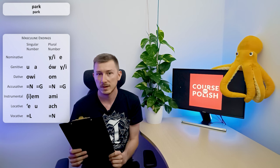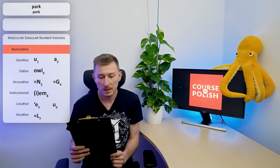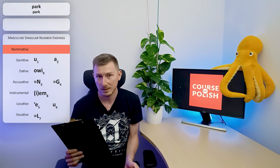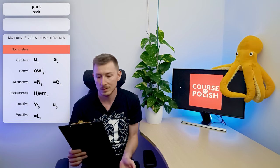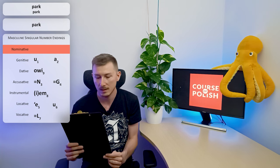Let's start with the declension in singular number. The first case, nominative case, is the basic form of the noun that you can find in dictionaries. So it's just PARK. We don't have to do anything. That's the basic form without any endings.